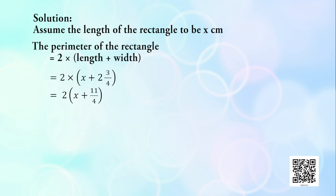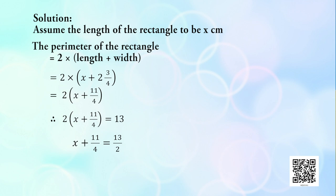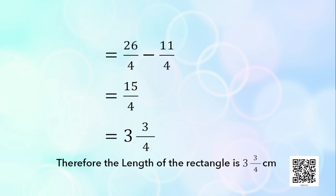The width is given as 2¾ cm, which is 11/4, and the perimeter is 13 cm. Substituting, we get 2 × (x + 11/4) = 13. Dividing both sides by 2 gives x + 11/4 = 13/2. Transposing 11/4 to the right hand side: x = 13/2 − 11/4 = 15/4, which can be written as 3¾. Therefore the length of the rectangle is 3¾ centimetres.